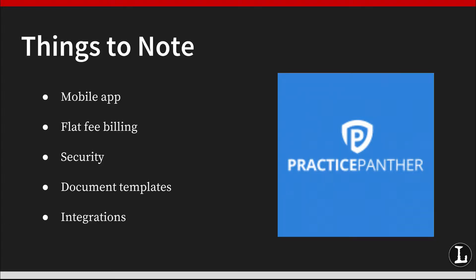Integrations: you can sync and integrate Practice Panther with a number of different apps, including Mailchimp, Court Rules, Office 365, LawPay, Google Calendar, Gmail, Outlook, QuickBooks, and more. Through Zapier, you can integrate Practice Panther with additional platforms and softwares. If integration is not available, Practice Panther provides an open API allowing you to develop anything on top of its existing features and data. This means Practice Panther is easily customizable to your needs.